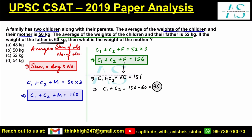Now putting the value of C1 plus C2, which is 96, into the first equation — which is 150 — we get the mother's weight as 150 minus 96, which is 54 kg. I hope this helps.